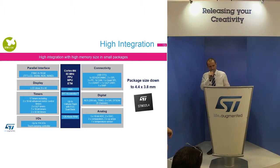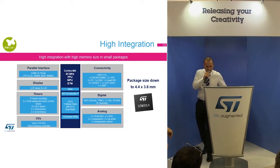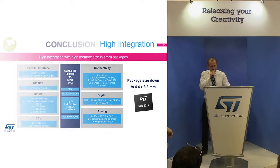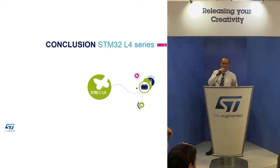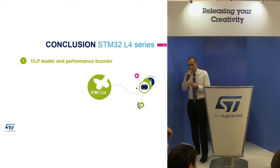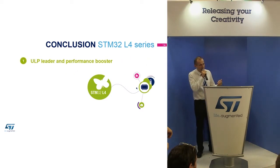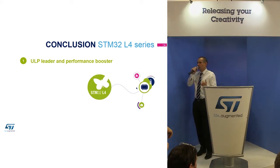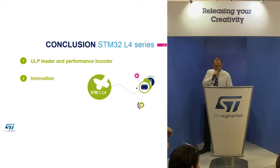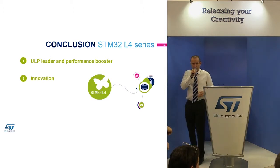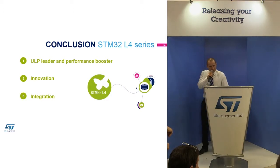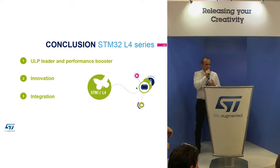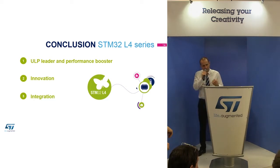In conclusion, the STM32L4 is an ultra low power leader and performance booster — it really combines the two worlds. It is the excellence of ultra low power, plus it adds a performance dimension to this ultra low power world. It adds a lot of innovation, both in architecture and in peripherals. And integration: a lot of memory up to 1 megabyte of flash and 128 kilobytes of SRAM, and a lot of smart peripherals embedded.